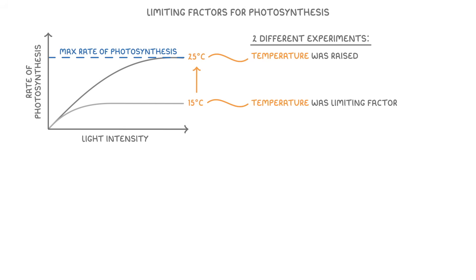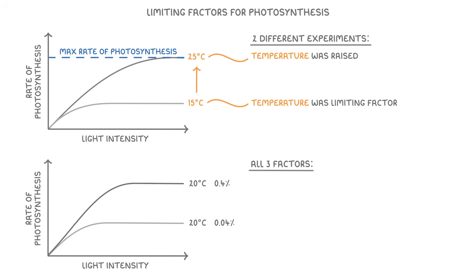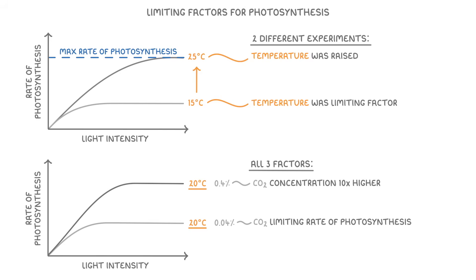Sometimes you might see a graph that shows all three factors. Here we can see that both curves have the same temperature, but the carbon dioxide concentration is 10 times higher in the top curve. So it must be the carbon dioxide concentration that's limiting the rate of photosynthesis of the lower curve.